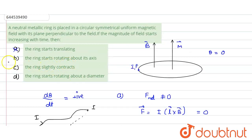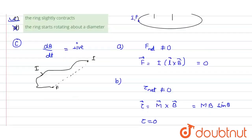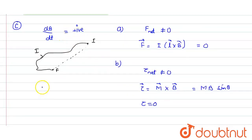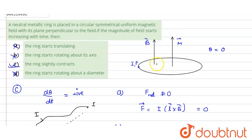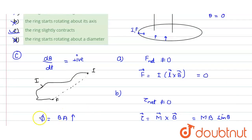So the ring cannot rotate about any axis — neither about its axis nor about its diameter, so options B and D are incorrect. That means option C is correct. Now, whether the ring contracts: dB/dt is positive, so the flux, which equals B times A, is increasing. By Lenz's law, the loop should try to decrease the flux. If the ring contracts, the area is reduced, and thus the flux is reduced. So option C — the ring contracts — is the correct answer.